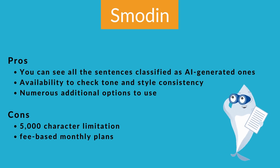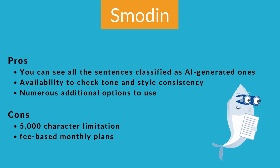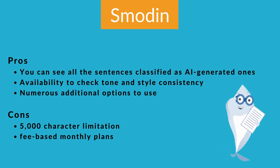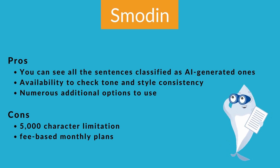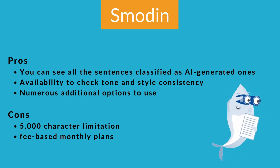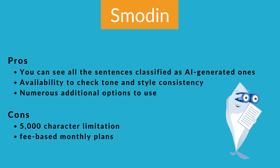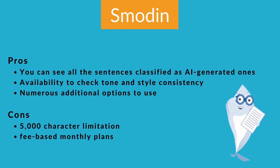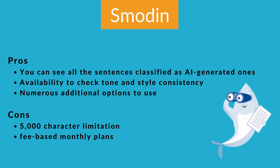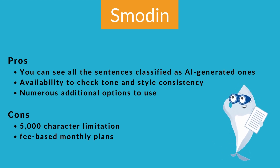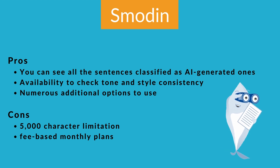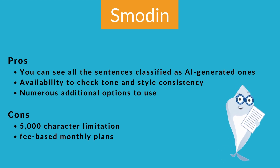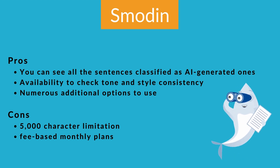Pros: You can see all the sentences classified as AI-generated. Availability to check tone and style consistency. Numerous additional options to use. Cons: 5,000 character limitation. Fee-based monthly plans.